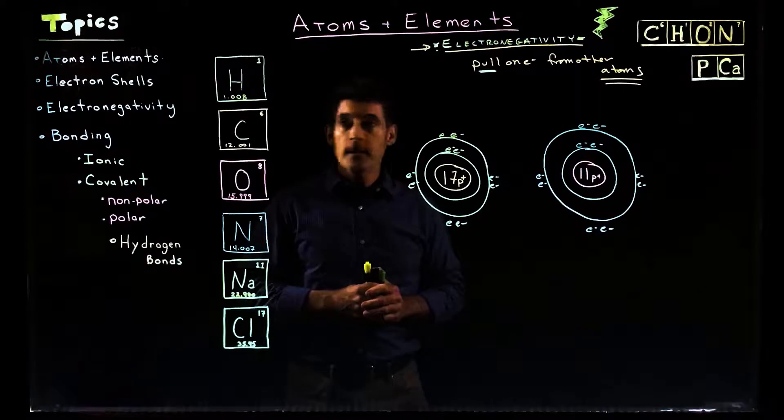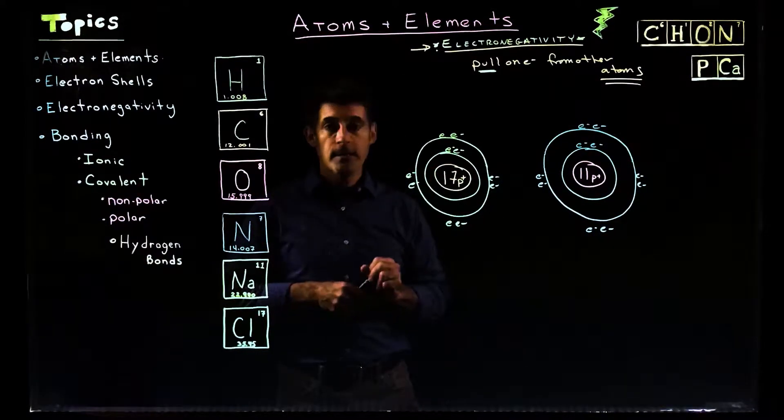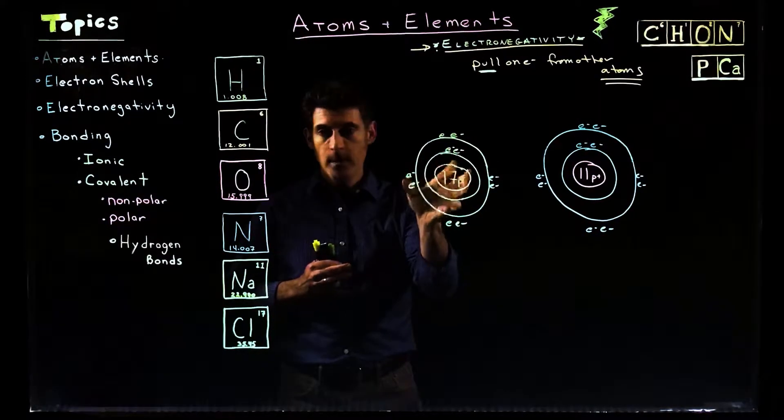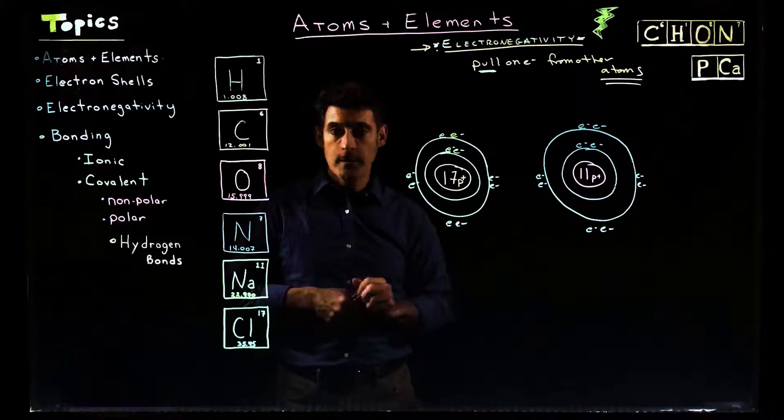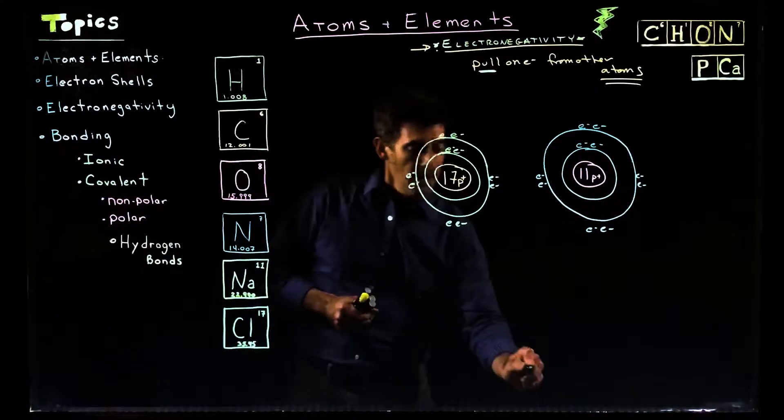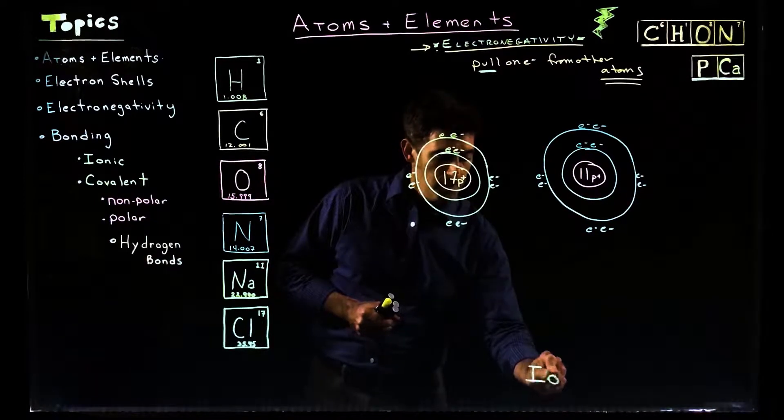All right, so we're going to look at another aspect of electronegativity, which is the pull of one atom on electrons from another atom. And we're going to look at, in particular, ionic bonds. So ionic bonds are going to be our topic.